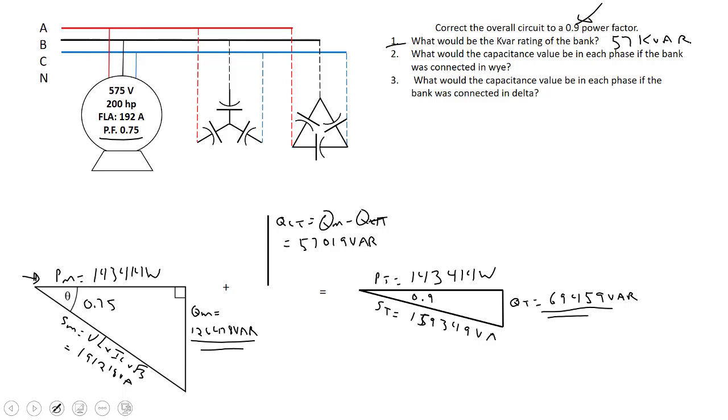Now moving on to questions two and three, we're going to have to figure out the VARs per phase. The VARs per phase, QC total is the same as saying QC of each phase times three. So if I want to know the QC of each phase, I'm just going to take my QC total and divide that by three. QC of the phase works out to about 19,006 VAR.